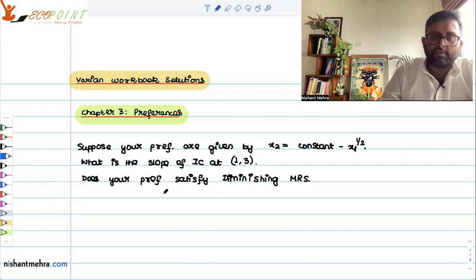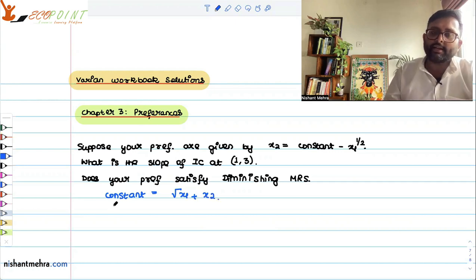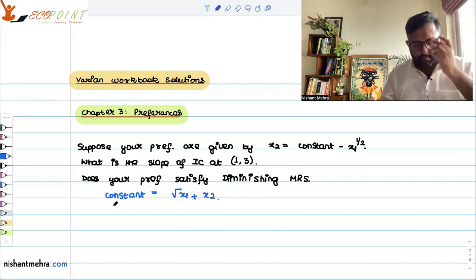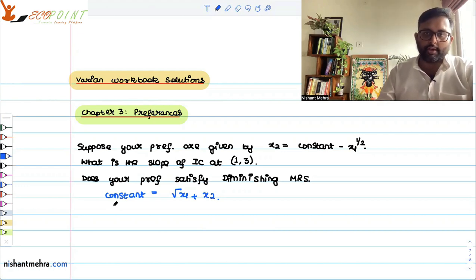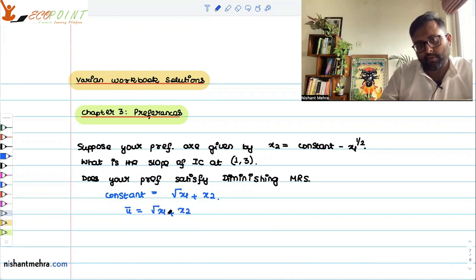When you have this kind of function, x2 equals constant minus root of x1, I can write it as constant equals root of x1 plus x2. The idea is that along an indifference curve, you will be getting the same utility. All the points are going to give you the same utility. So I can call this u bar equals root of x1 plus x2.